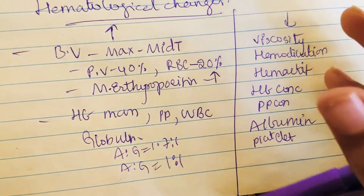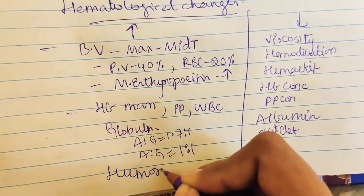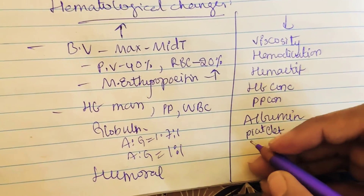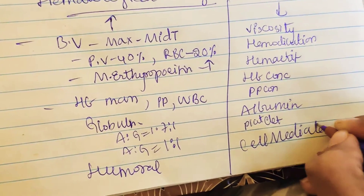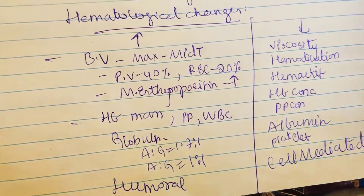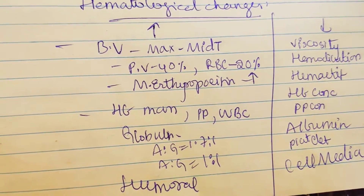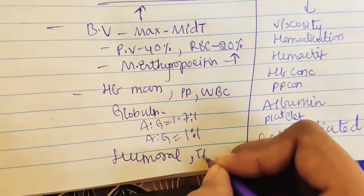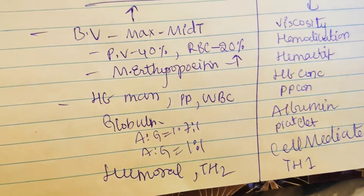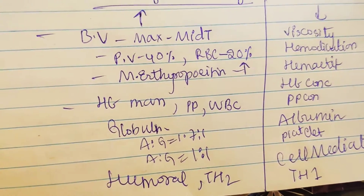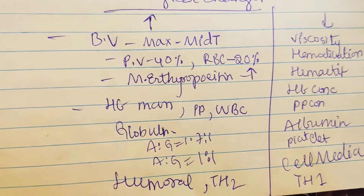Platelets decrease, but not below normal — this is known as benign gestational thrombocytopenia, due to hemodilution and splenomegaly. There are decreased monocytes. Pregnancy is an immunocompromised stage. Humoral immunity increases while cell-mediated immunity decreases. T-helper 2 cells increase and T-helper 1 cells decrease — this is called the TH1 to TH2 shift — and this shift is not seen in pregnant women with PIH.